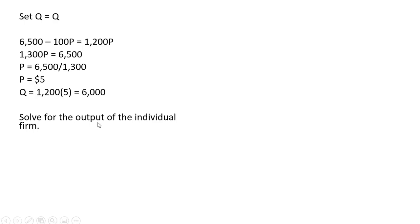Now we want to solve for the output of the individual firm. So we're going to plug $5 into the individual firm's supply equation. And as we saw on the first slide, the individual firm's supply equation is q equals 100P. So plugging $5 into that, the individual firm will produce 500 units. And since there are 12 firms each producing 500 units, that's another way of getting 6000 units of output backing into that number.